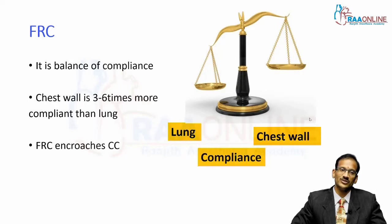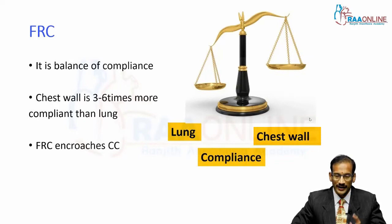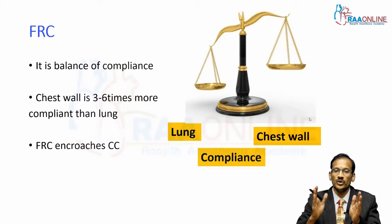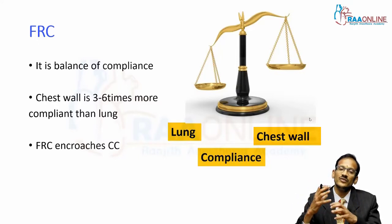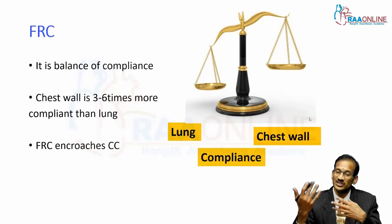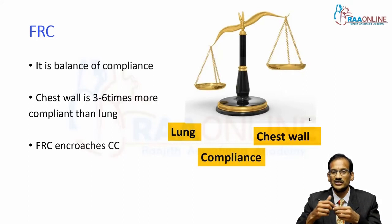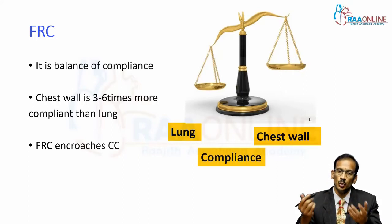The lung tends to recoil inwards whereas the chest tends to recoil outwards. In children, they have a very compliant chest wall, which is three to four to six times higher than the lung compliance. What this translates to is that the FRC is lower in children.